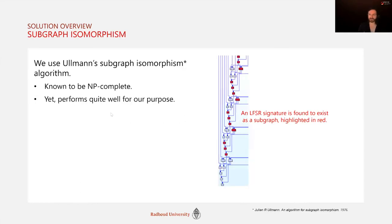Our DFGs are then compared to our signatures using Ullmann's subgraph isomorphism algorithm. Despite NP-completeness, it performs quite well for our purposes. The picture on the right shows a signature match as a subgraph.